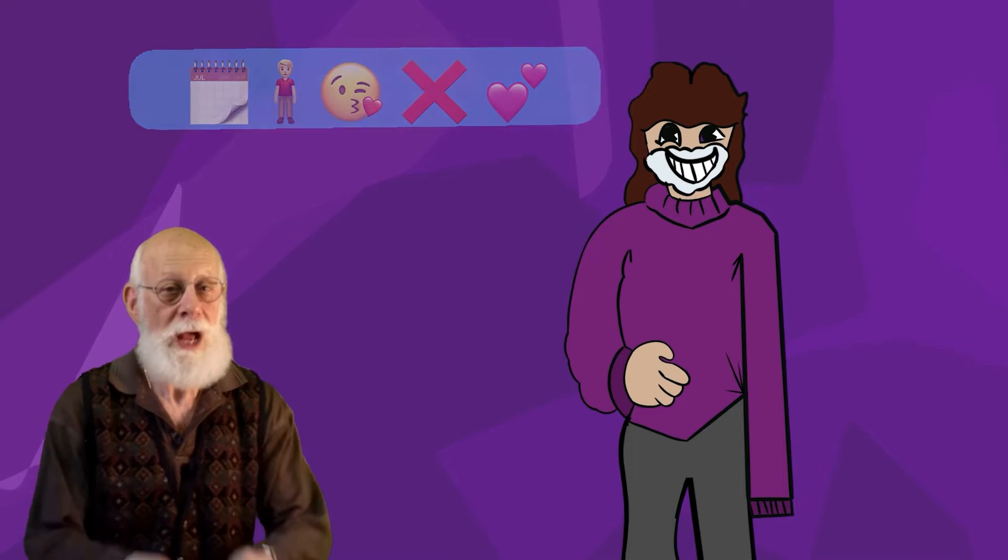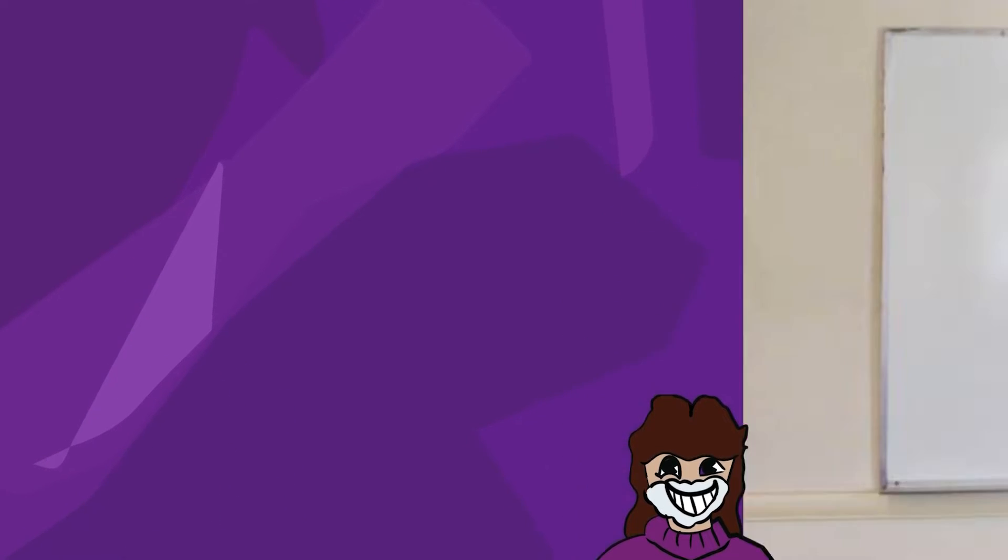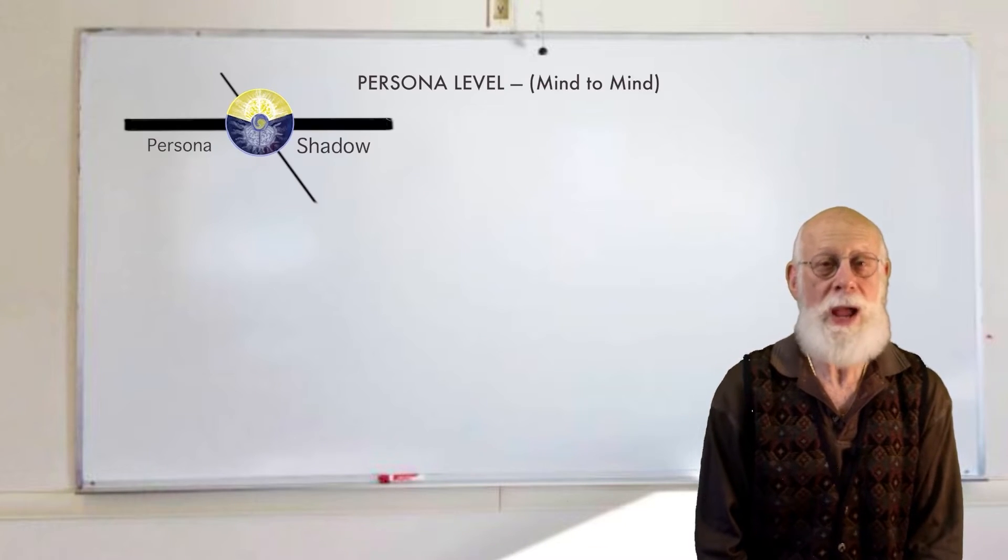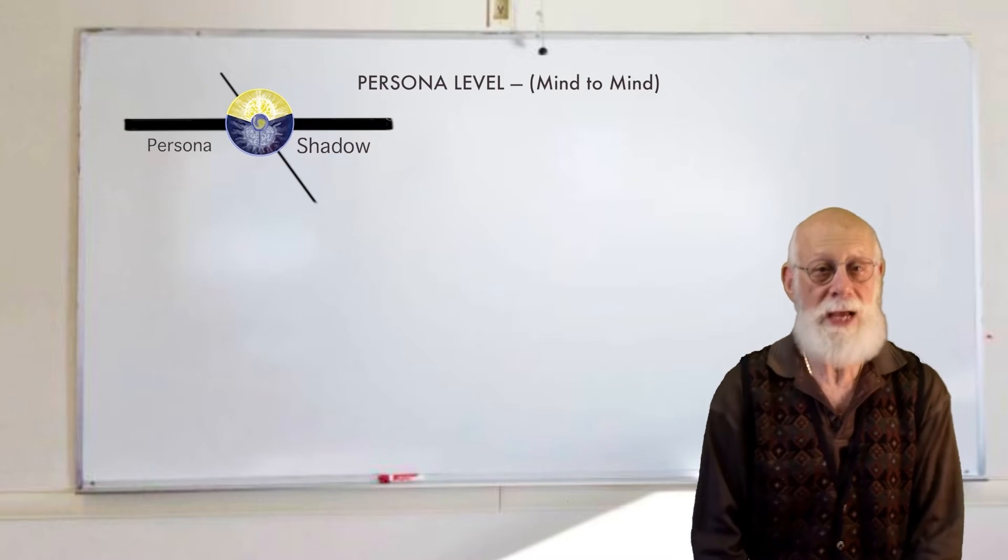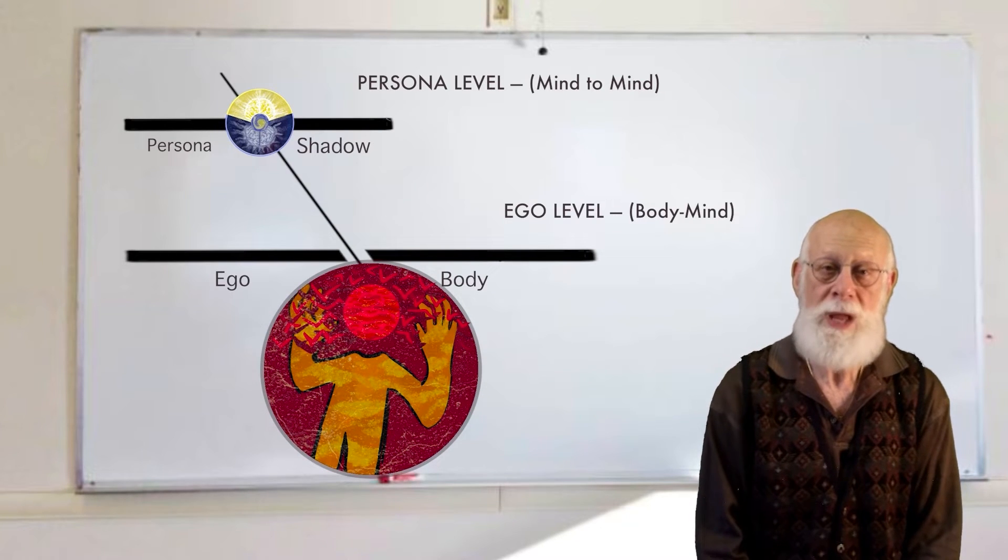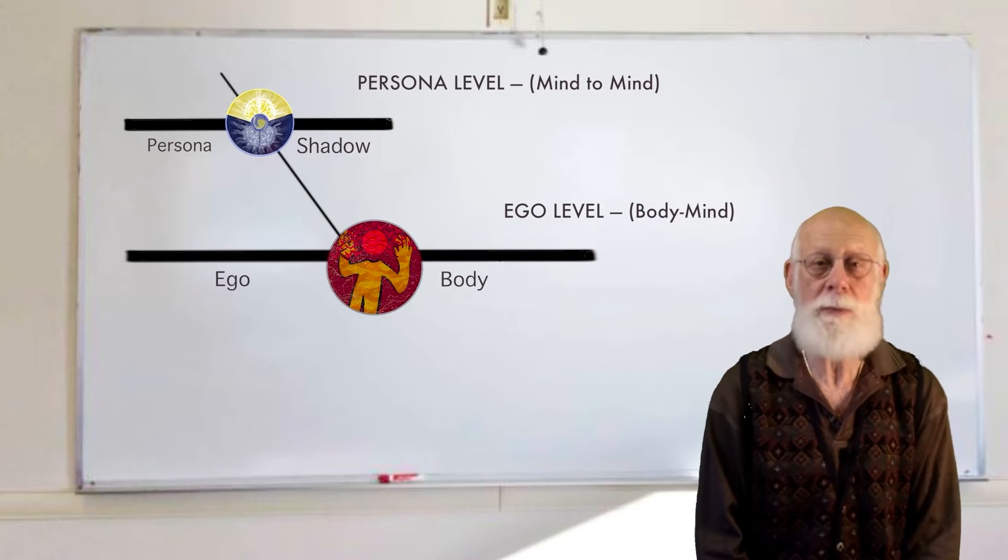Once again, the schism, the separation between the mind and the body. So if the first level of counseling is trying to combine the shadow and the persona so that there's more connectedness, the second part of therapy would be looking at the body and the messages coming from the body and trying to bring that together with the mind. First one's mind-mind, second one is mind-body.